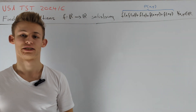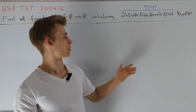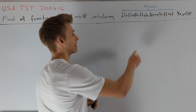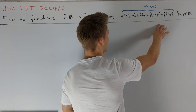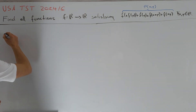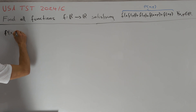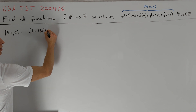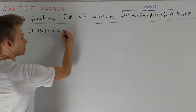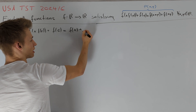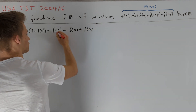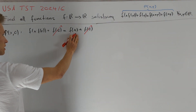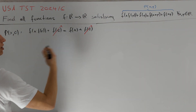As usual we want to try plugging in small values for x and y. First we try x = 0, but the left hand side equals the right hand side, so this gives us nothing. Therefore let's try P(x, 0). This gives us f(x)·f(0) + f(0) = f(x) + f(0). We can subtract f(0) from both sides to get f(x)·f(0) = f(x). Let's keep this in mind for later.